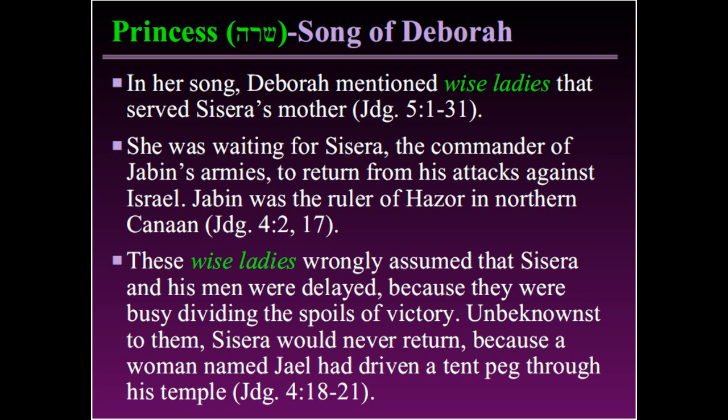The first occurrence of the common noun is in Deborah's song. In her song, given in Judges chapter 5, she sang of wise ladies — princesses — that served Sisera's mother. Sisera's mother was waiting for her son, the commander of Jabin's armies, to return from his attacks against Israel. These wise ladies wrongly assumed that Sisera and his men were delayed because they were busy dividing the spoils of victory. Unbeknownst to them, Sisera would never return because a woman named Jael had driven a tent peg through his temple, as recorded in Judges chapter 4.